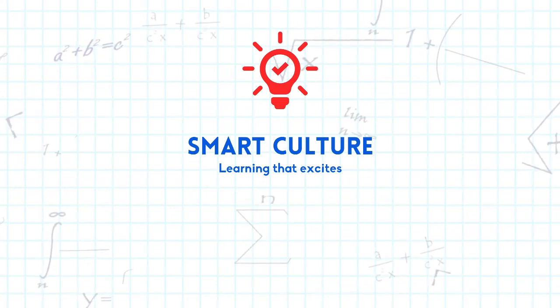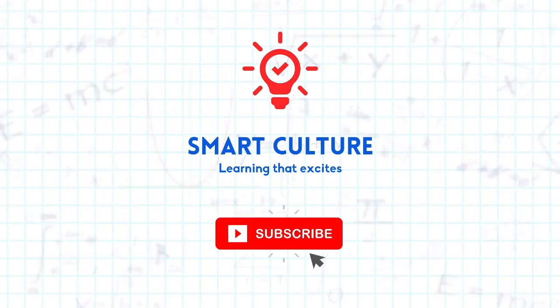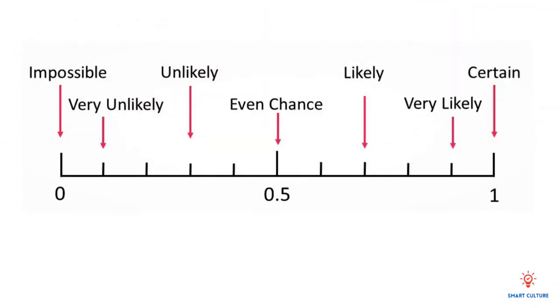Smart Culture Mathematics. Let's discuss the probability scale. To describe the probability that something will happen, we can use a probability scale.